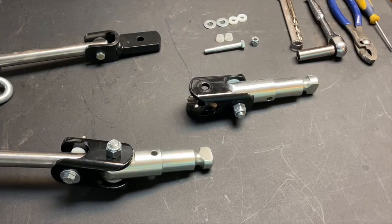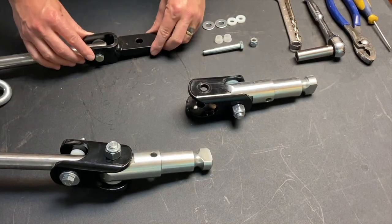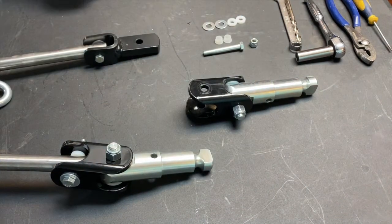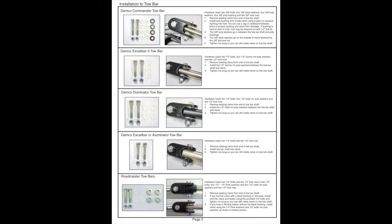The Commander 2 tow bar comes standard with our classic bar ends. The tabless bar ends will come with your base plate and will need to be swapped out. You can find the directions on how to do this in the back of the instruction manual for the base plate installation.